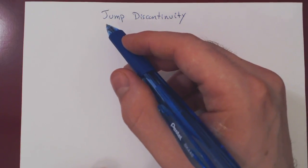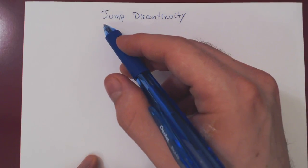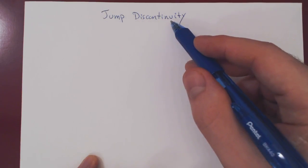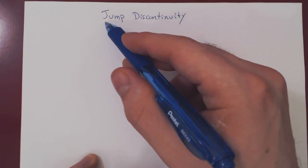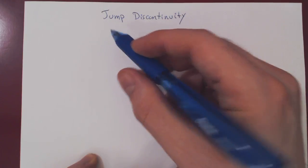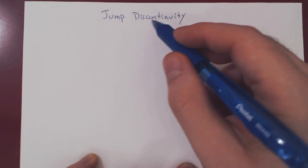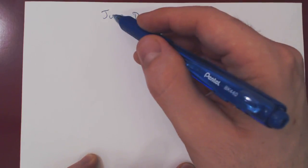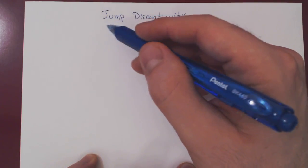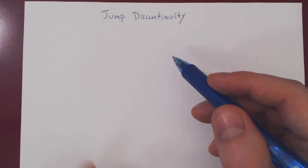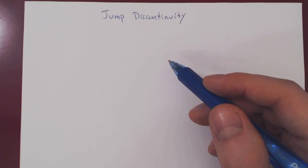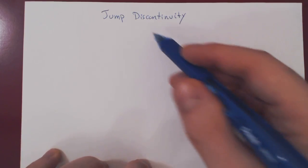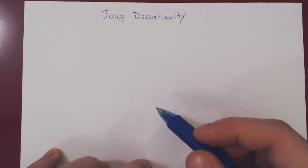In this video, we will discuss a second type of discontinuity, namely a jump discontinuity. The name gives it away: a function will have a jump discontinuity at a given value of x if there is a jump in the function. Let's consider two examples and see what it takes in terms of the left-hand limit and the right-hand limit to imply a jump in the function.